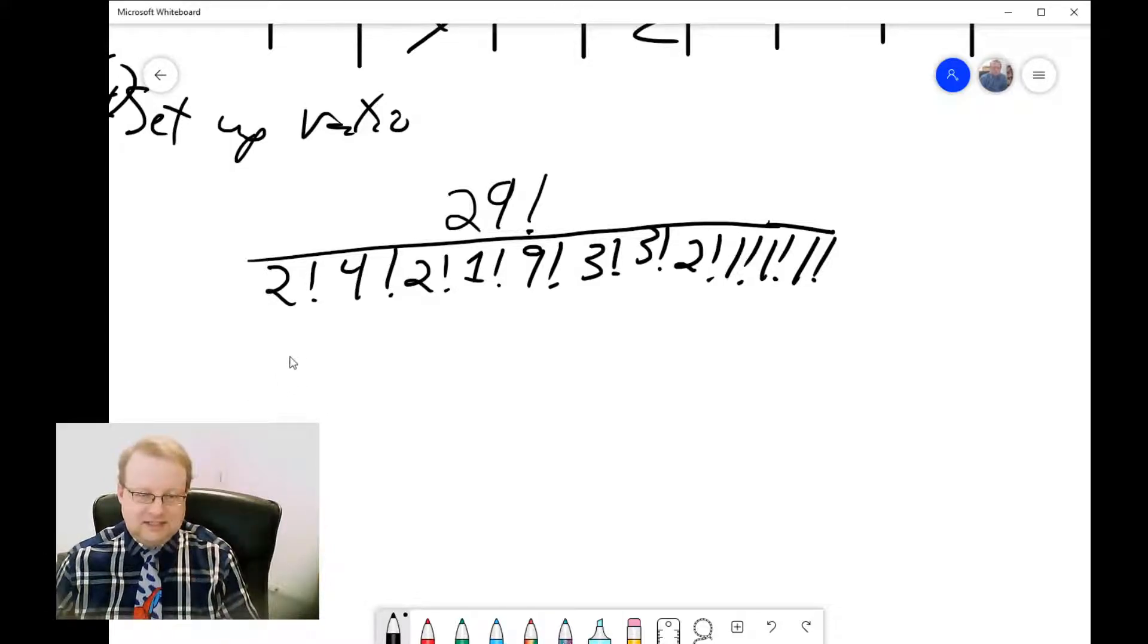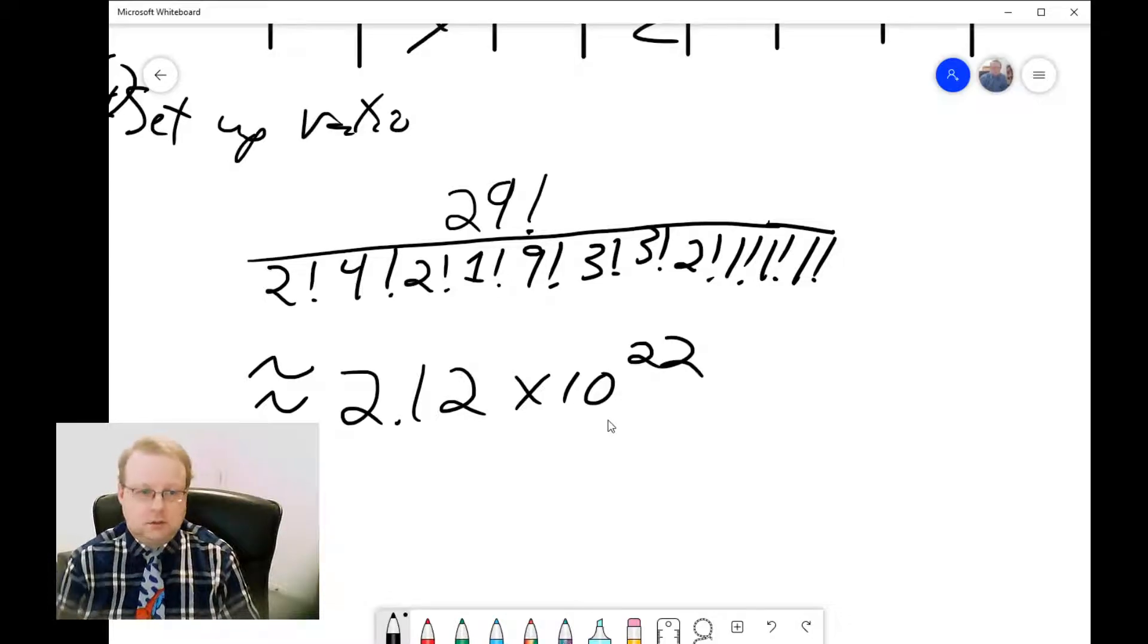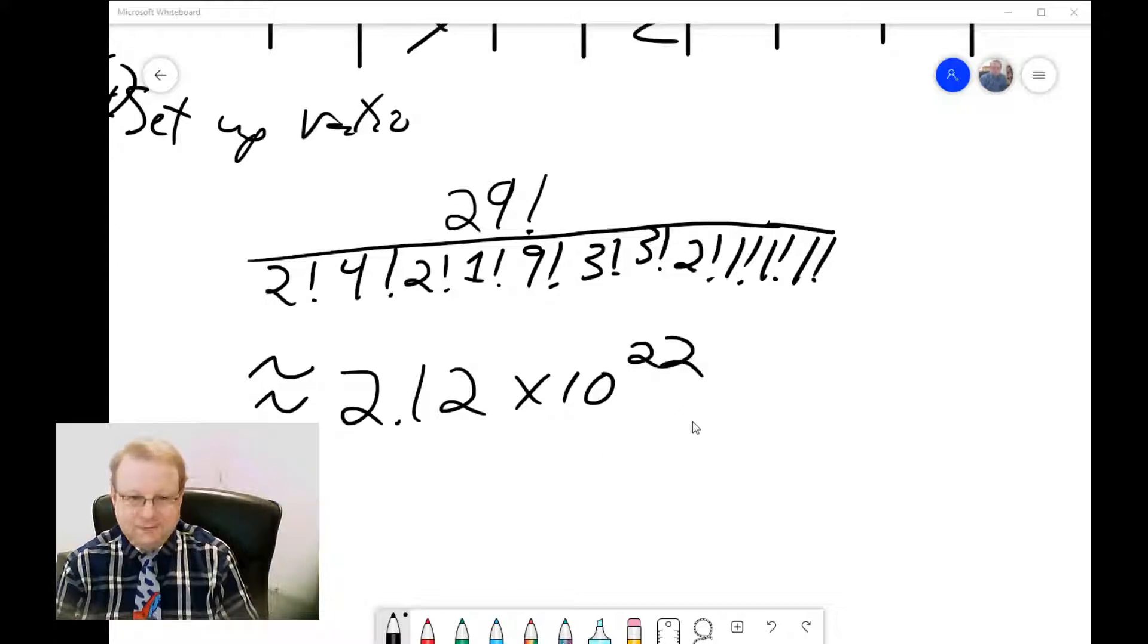This gives us approximately—this wavy equal sign means approximately equal to—2.12 times 10 to the 22 possible ways to arrange it.